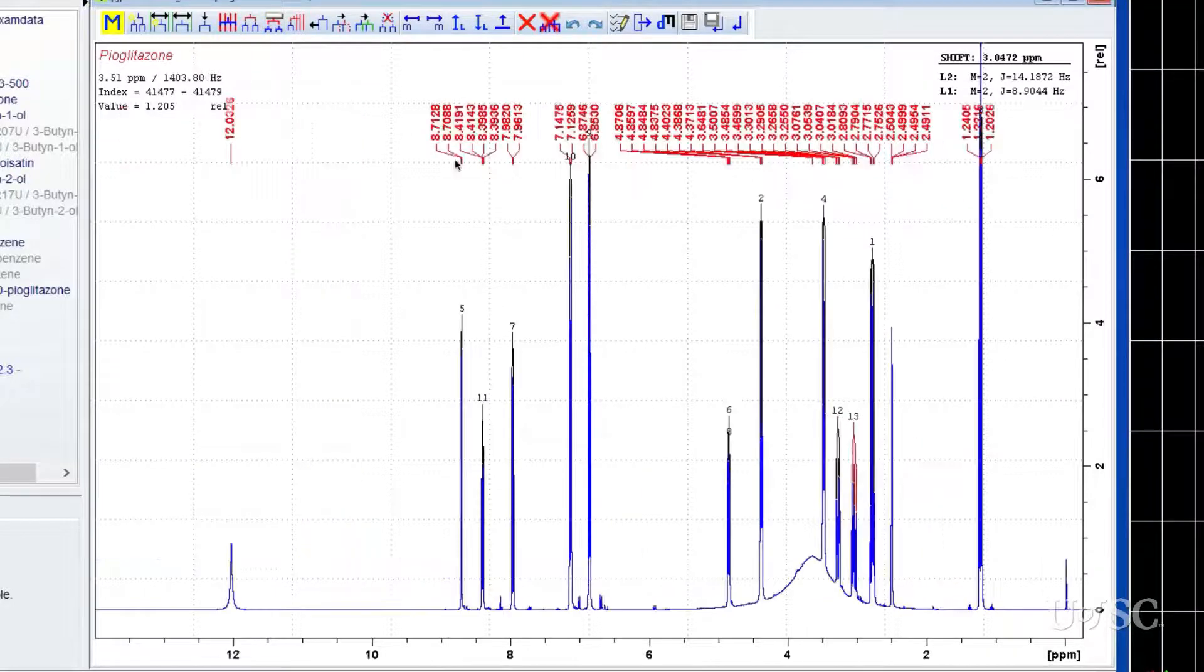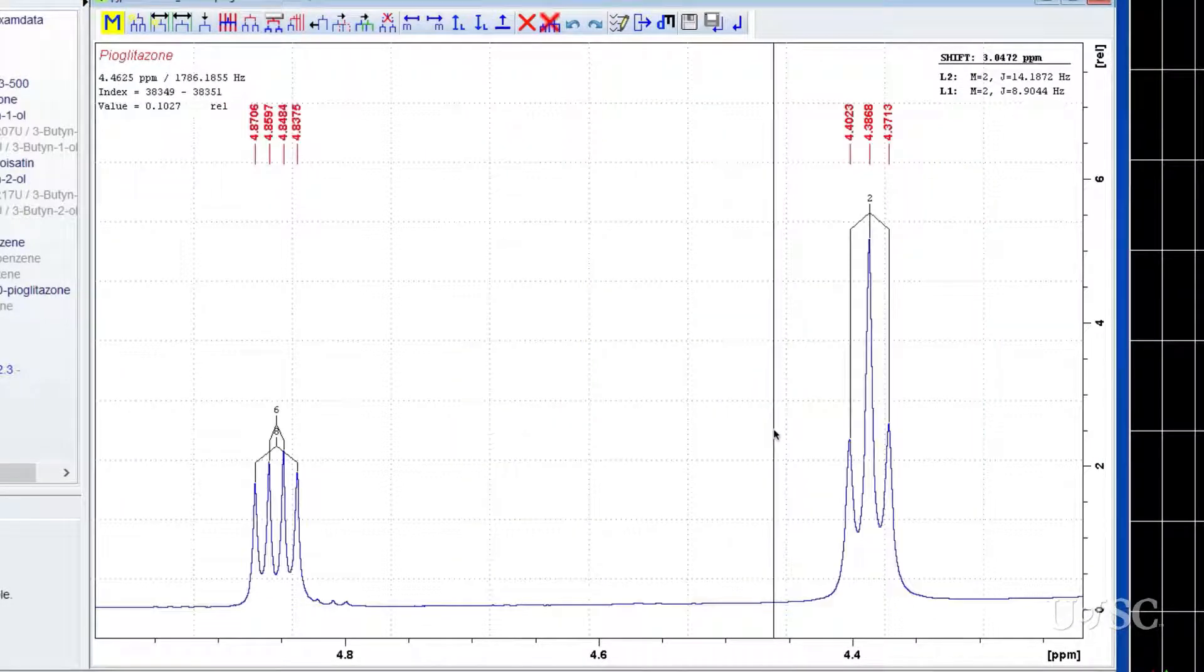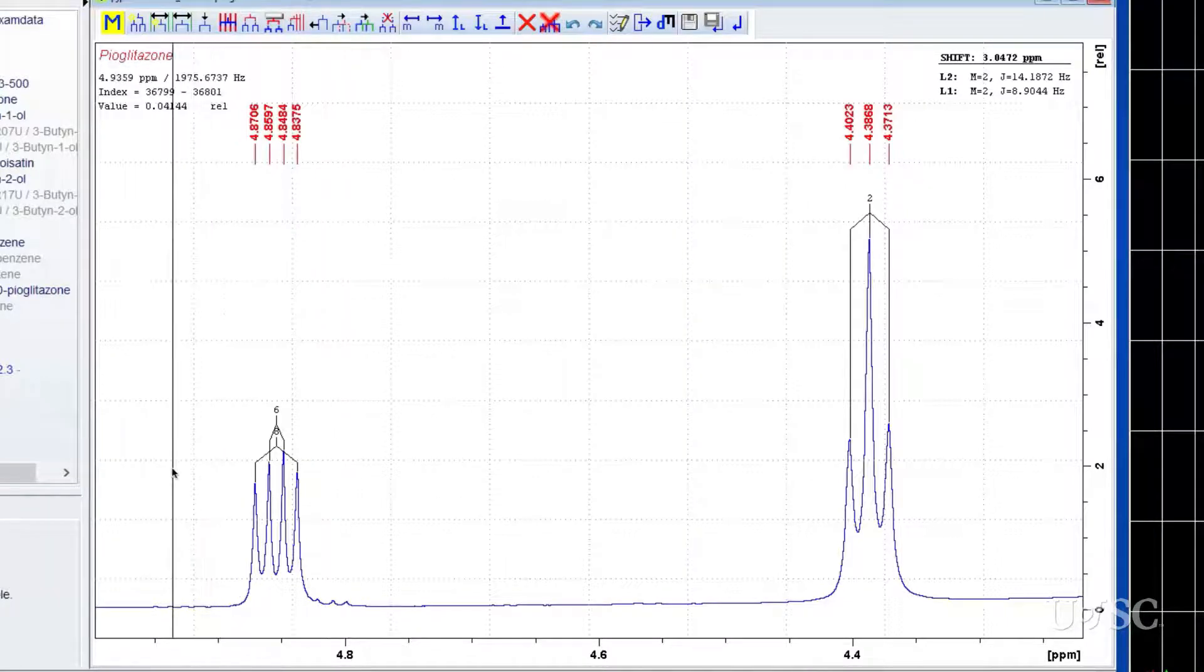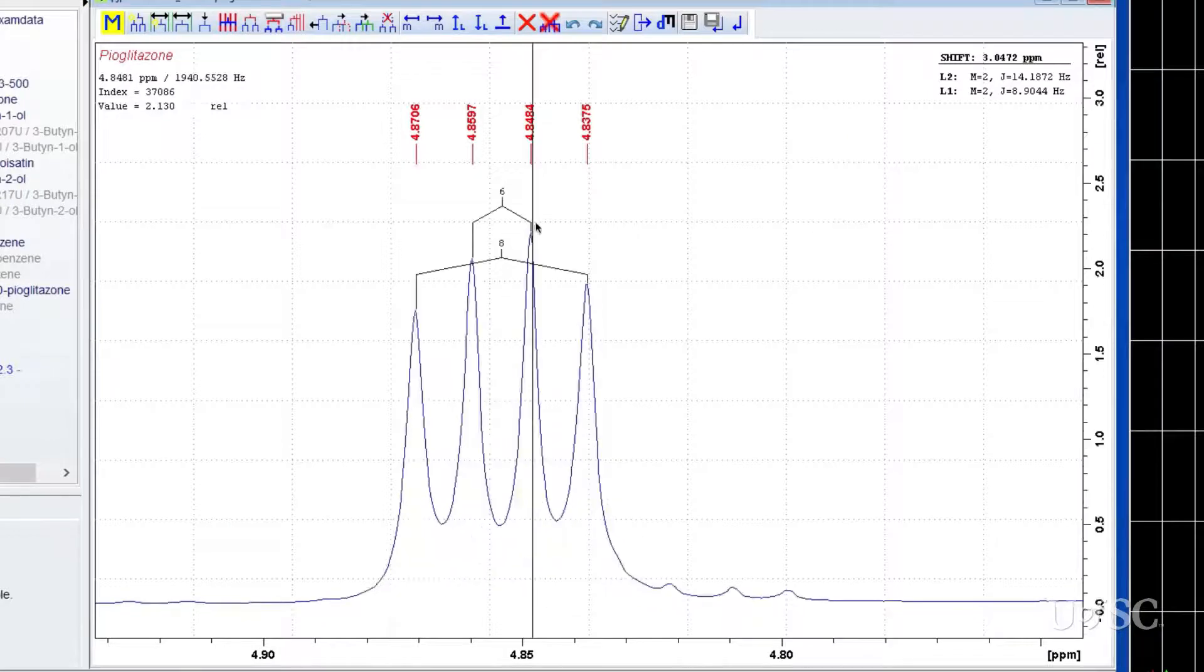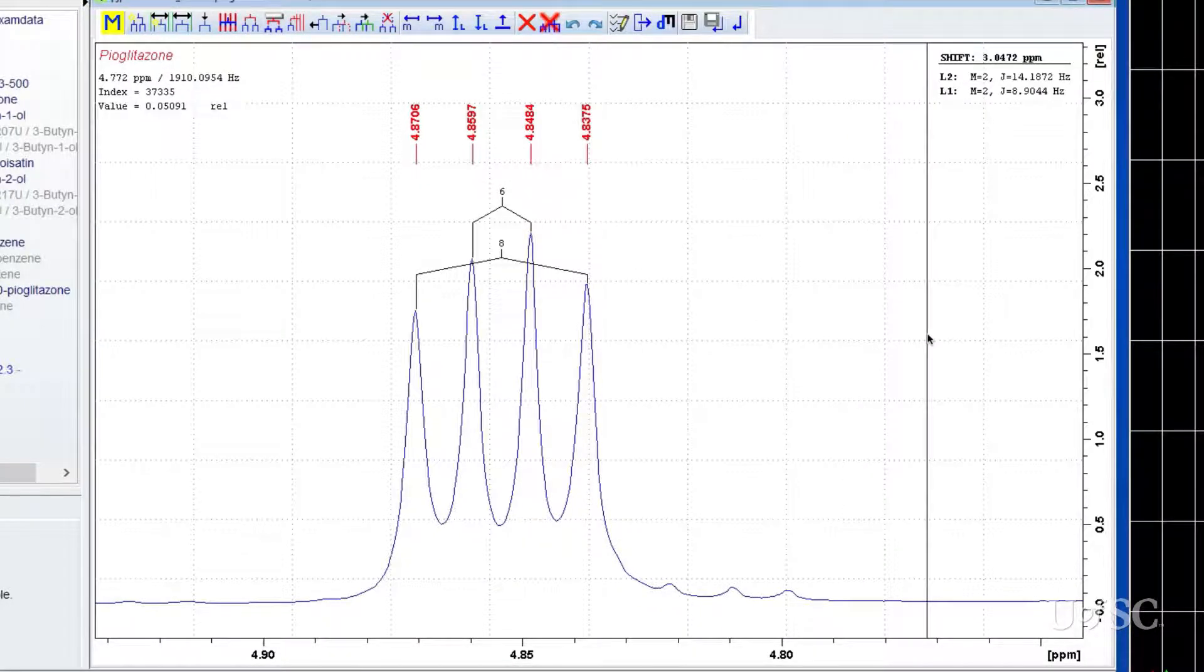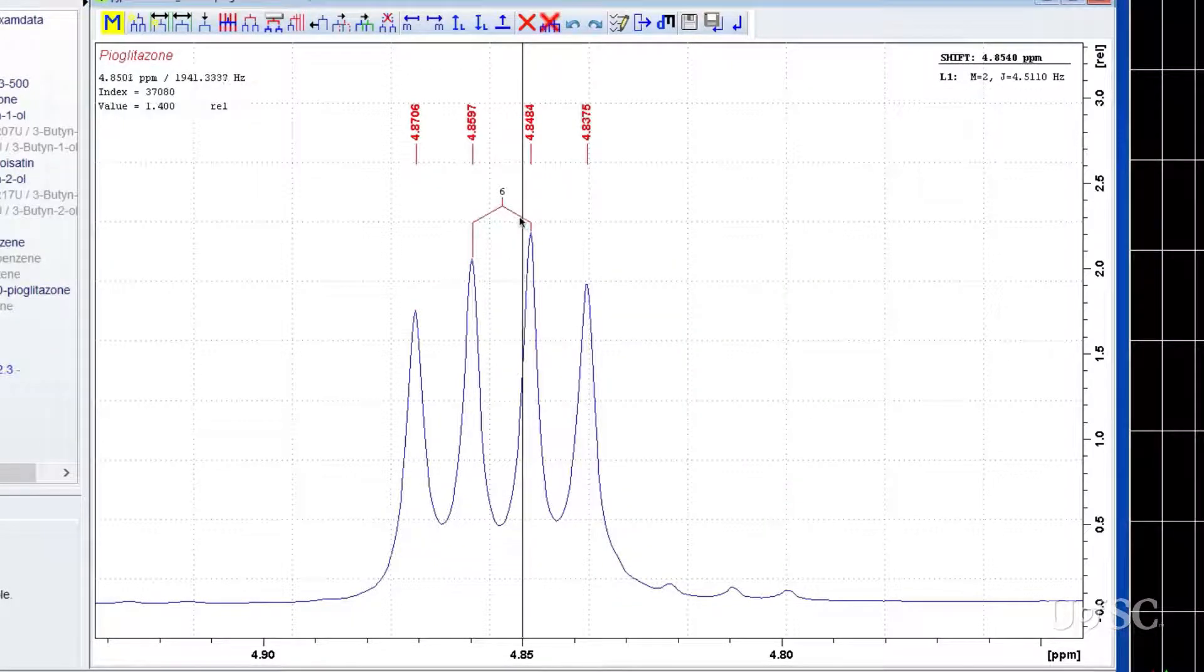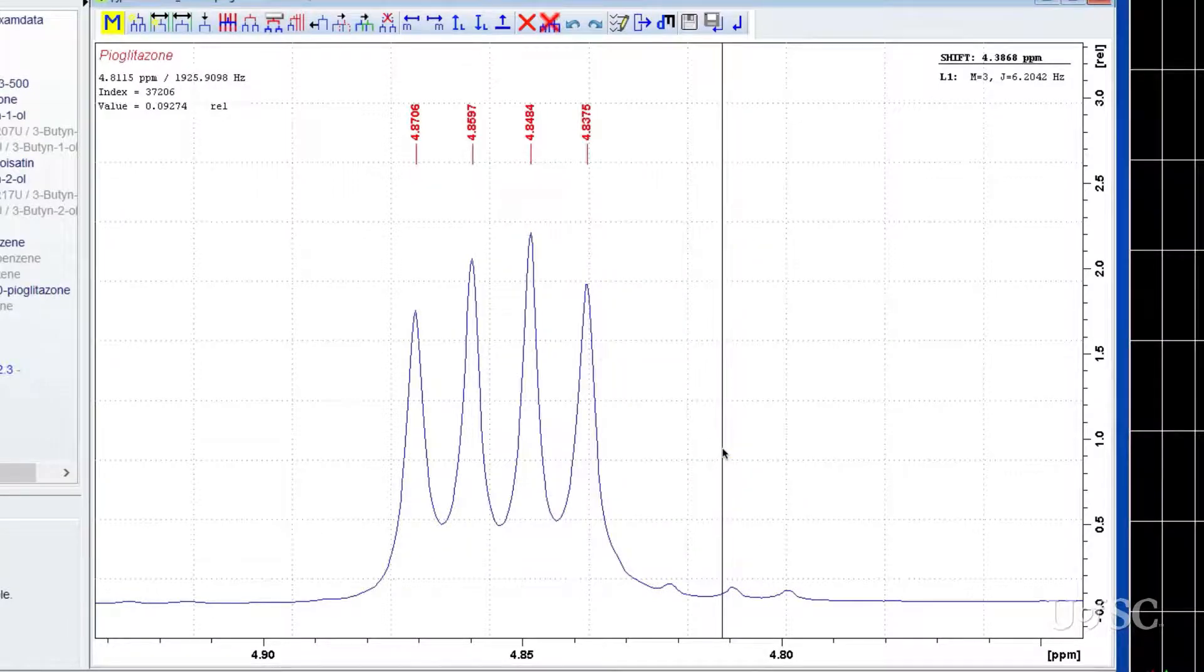The other two multiplets in this region look correct so we move to the next area. The triplet at 4.39 is correct, but the doublet of doublets at 4.85 has been wrongly identified as two overlapped doublets. The easiest way to correct this is to delete the two brackets and create the multiplet manually. We delete the two brackets one at a time, again by selecting them and then choosing delete multiplet with the pop-up menu brought up with a right button mouse click.